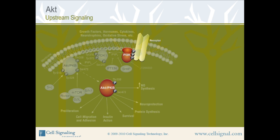PI3K acts to activate AKT. PI3K phosphorylates phosphatidylinositol-4,5-bisphosphate, known as PIP2, to generate phosphatidylinositol-3,4,5-triphosphate, also called PIP3.